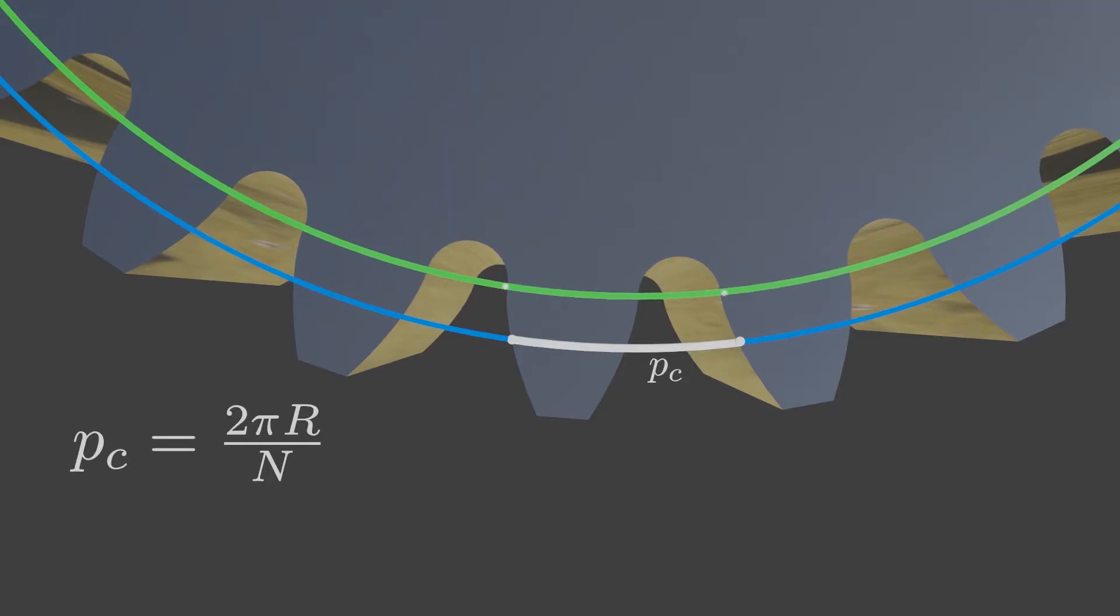The base pitch is equal to the circular pitch of the gear on the base circle. The base pitch and the circular pitch are related as follows.